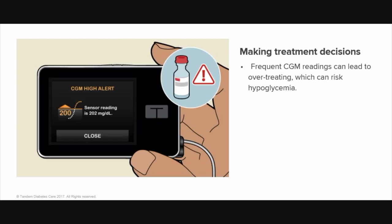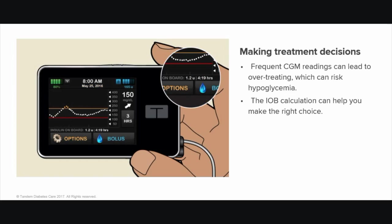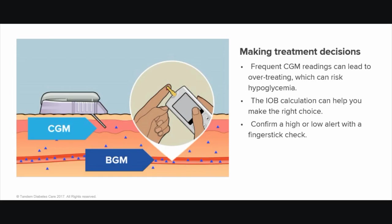Remember that CGM gives you access to more frequent glucose readings than you may be used to. If you set high alerts, you will receive an alert each time a sensor reading goes above the setting. Someone new to CGM may see a high glucose level and want to treat it with insulin more often than necessary, which risks hypoglycemia or low blood sugar. The TSLIM G4 system can help you avoid this mistake with the Insulin On Board or IOB calculation, which helps you avoid taking too much insulin. Also remember that a CGM sensor glucose reading may lag behind a blood glucose meter reading from a finger stick check, particularly when your blood glucose is changing rapidly. This is why it's important to confirm a high or low alert with a finger stick check.